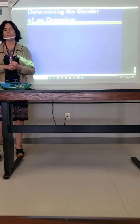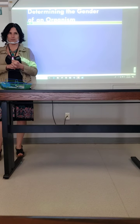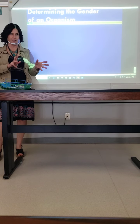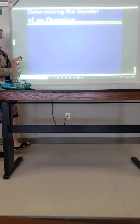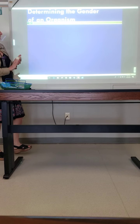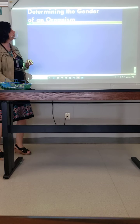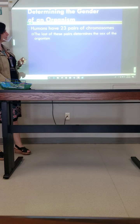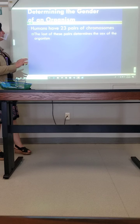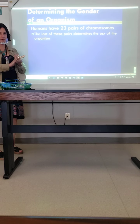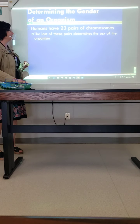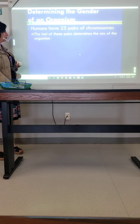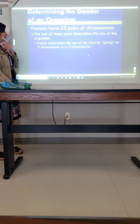We're going to come back to the co-dominants practice at the end. I want to finish these notes up. This is slide 36. We kind of mentioned this, but humans have 23 pairs of chromosomes. The last pair is what determines the sex of the organism — is it a male or a female?